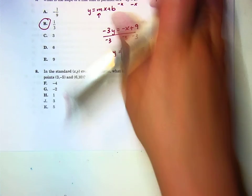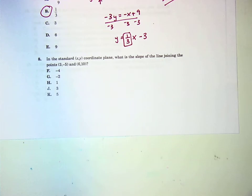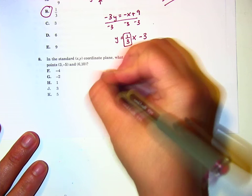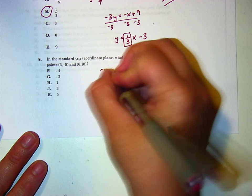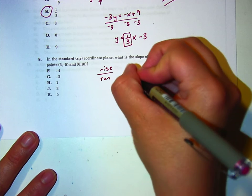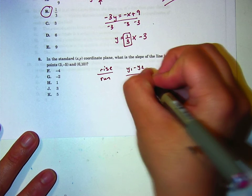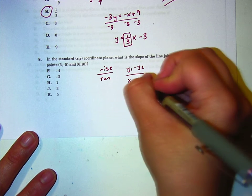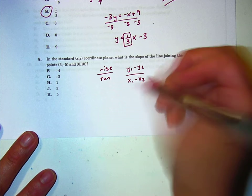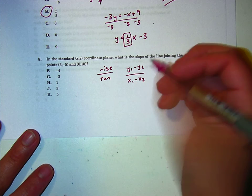Okay. 8. In the standard xy coordinate plane, what is the slope of the line joining those points? Alright, so to find the slope of a line, it's rise over run, if you were gonna graph it. Or you could think about y1 minus y2 over x1 minus x2. That's basically the vertical change divided by the horizontal change.